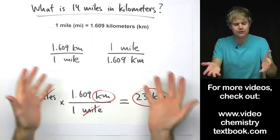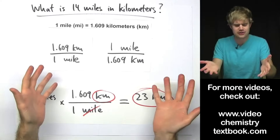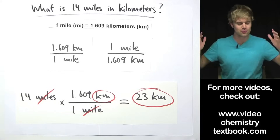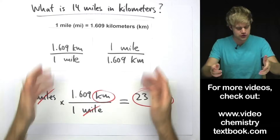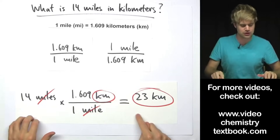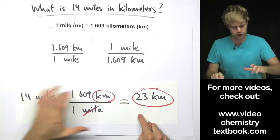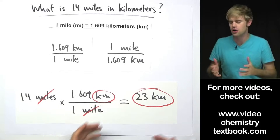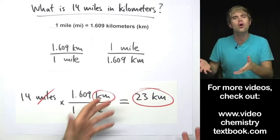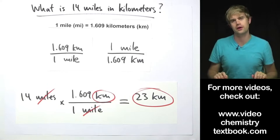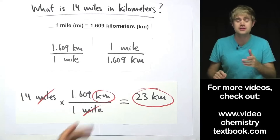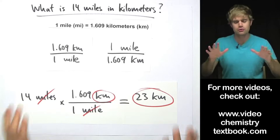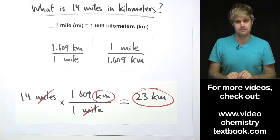It's like when I first learned conversion factors, I was a unit conversion robot. I could write out the conversion factors, cancel my units, multiply and divide and get my final answer, but I had no idea what was going on. This is a problem, and I want to try to address it in this video.